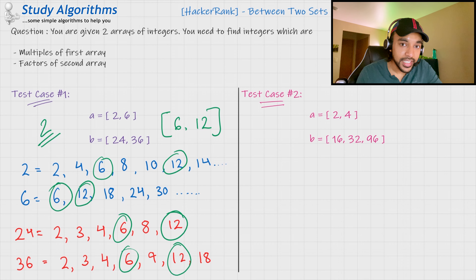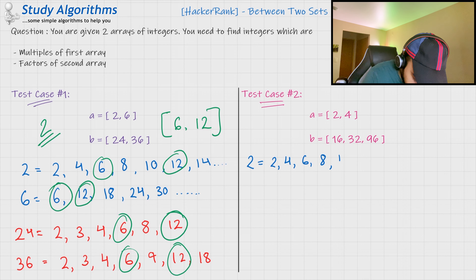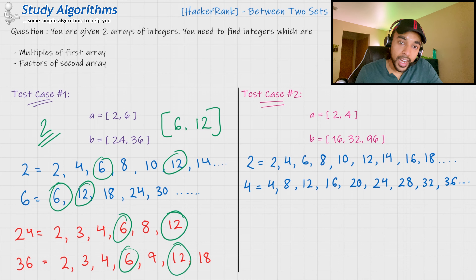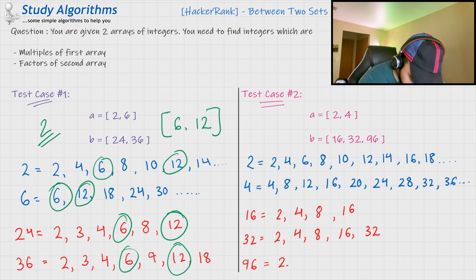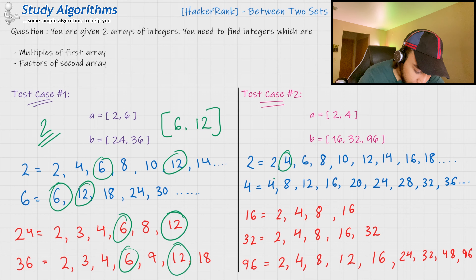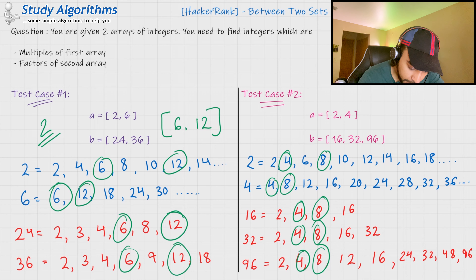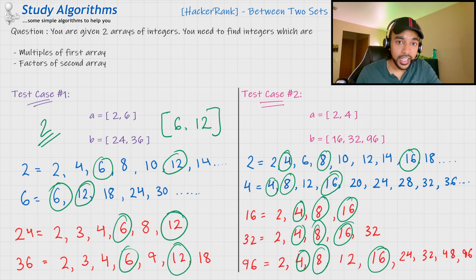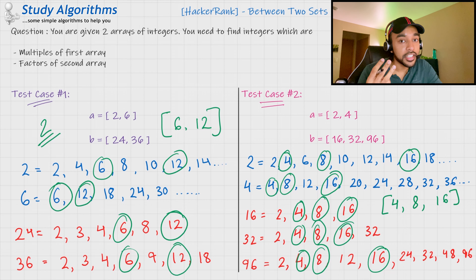Similarly, for our second test case, the multiples of the first array and the factors of the second array are computed. Out of all of these elements, 4, 8 and 16 are common in all of them, and hence you find 3 integers. So in this case, 3 is your answer.